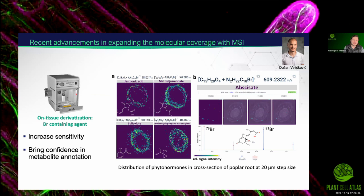One of the major challenges we have with MALDI-MSI and molecular imaging is that some of the smaller molecules are very hard to detect, and they are also low in abundance — like phytohormones. So we developed a new derivatization method that helps us detect these molecules and gives us a lot more confidence in their identity based upon the molecular tag we put on. This allows us to more accurately identify the chemical formula and match it with what the molecule might be.